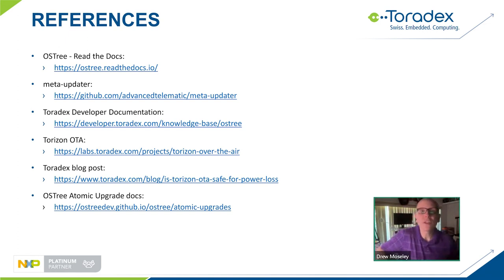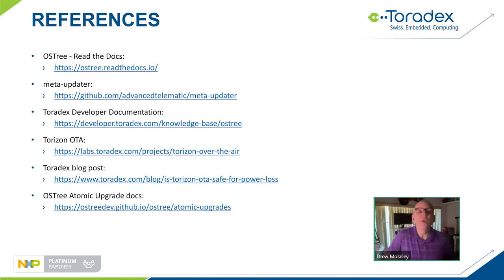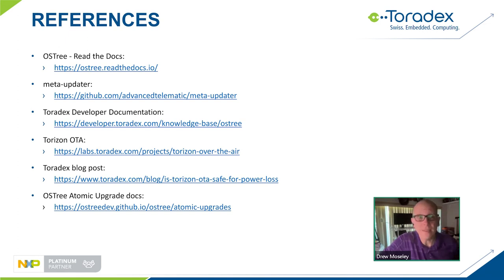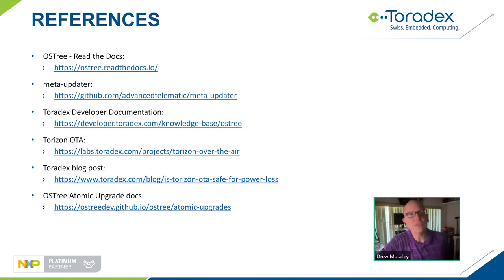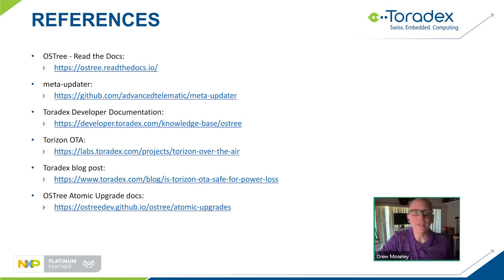Can OSTree updates be used for application updates or only OS updates? It can be used for both. In our case it only updates the base operating system. If your application runs in the base OS, you would do an OSTree update to update it. But the typical Torizon model is to put applications in Docker containers so you can update them independently from the base operating system, using Docker mechanisms rather than OSTree for those application updates.